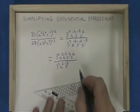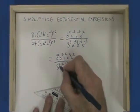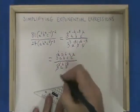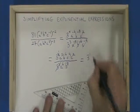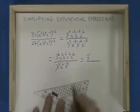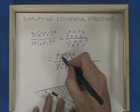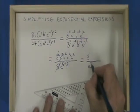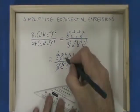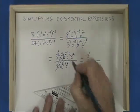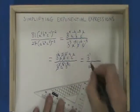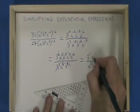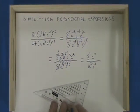Now it's time to do some cancelling and simplification. All 3 of the 3s on the bottom cancel with 3 of the ones on the top, leaving me with 3 to the power of 1 on the top. All 3 of the a's on the top cancel with 3 of the a's on the bottom, leaving me with a to the power of 3 on the bottom. All 6 of the b's on the top cancel with 6 of the b's on the bottom, leaving me with b squared on the bottom. And c to the 9 times c to the 2 is c to the 11, which stays on the top. This is my final answer.